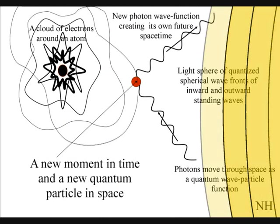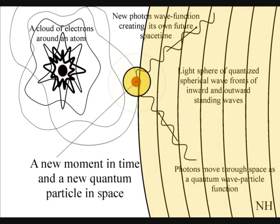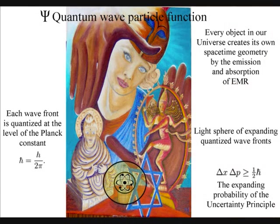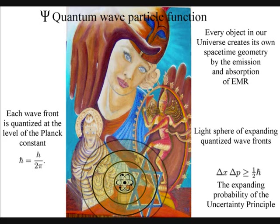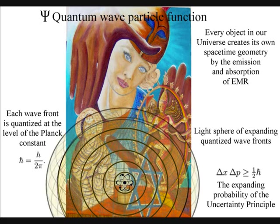Each wavefront will create a probability of a future event. When a wavefront comes in contact with the electrons on the surface of another atom, it will create a new moment in time and space, in the form of a photon-electron coupling. This has nothing to do with consciousness.